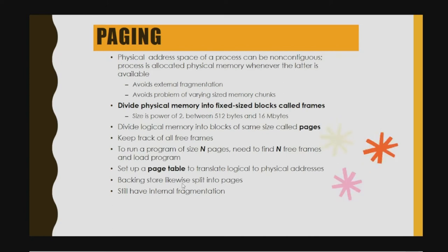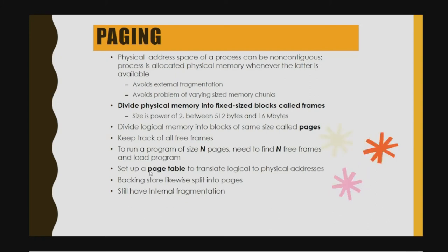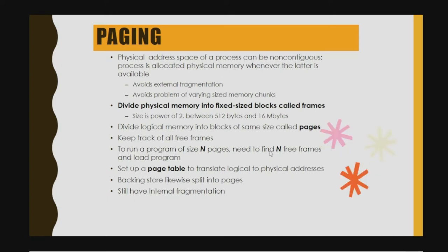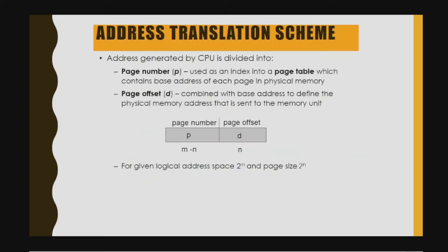Backing store is likewise split into pages. However, in paging we can still have internal fragmentation issues because we have fixed-size blocks called frames. The address generated by the CPU is divided into p (the page number) and d (the page offset). The page number is used as an index into the page table.